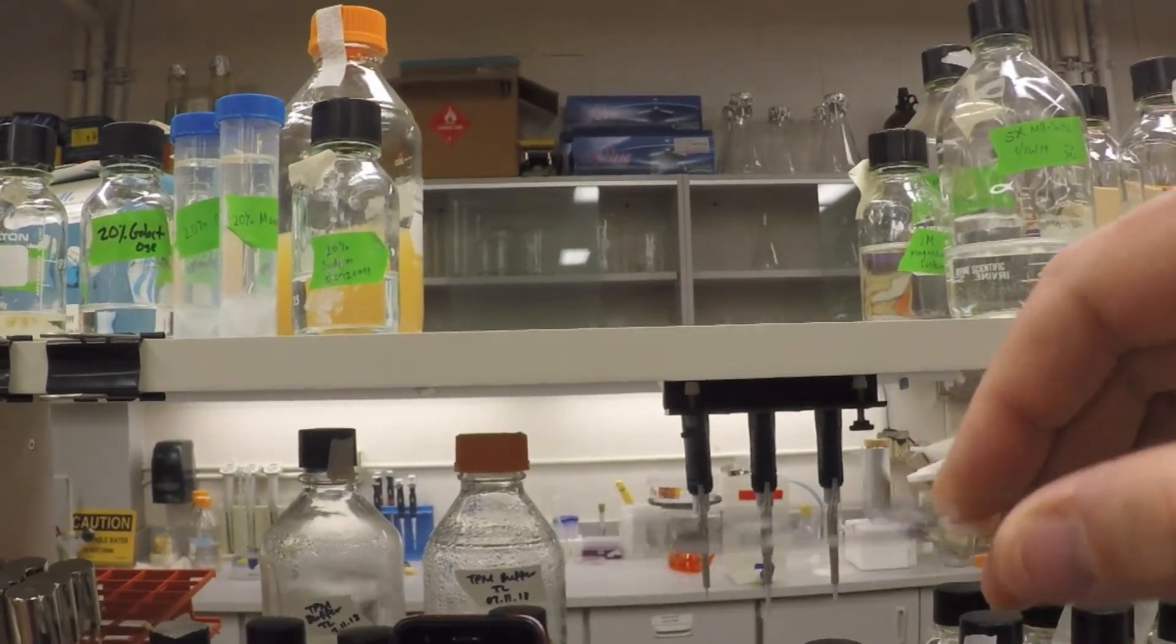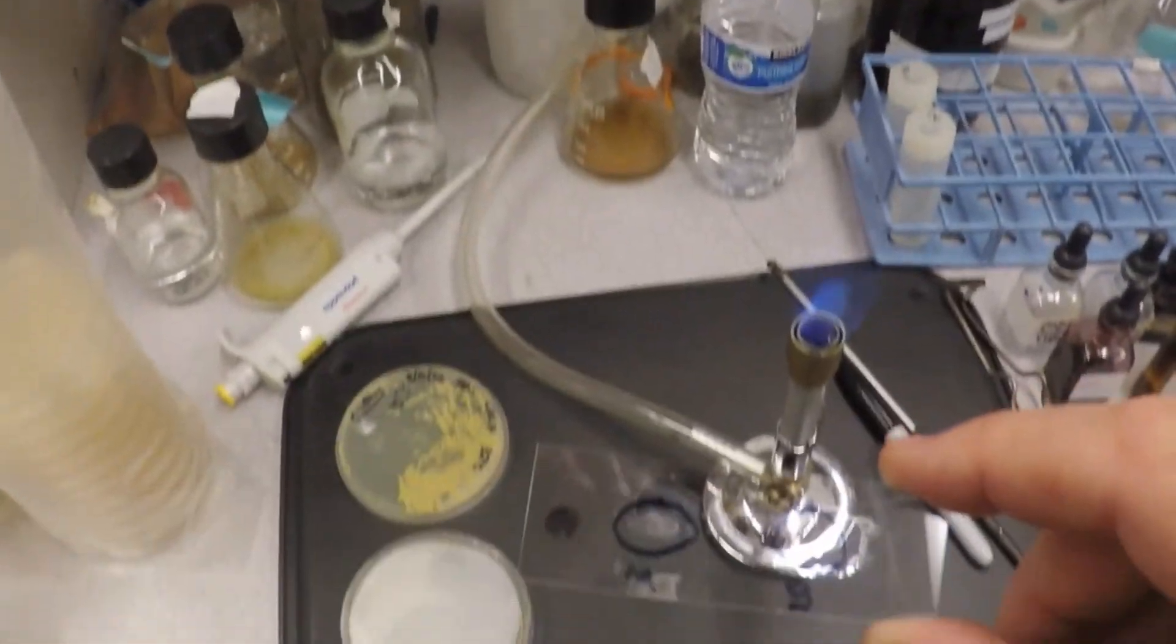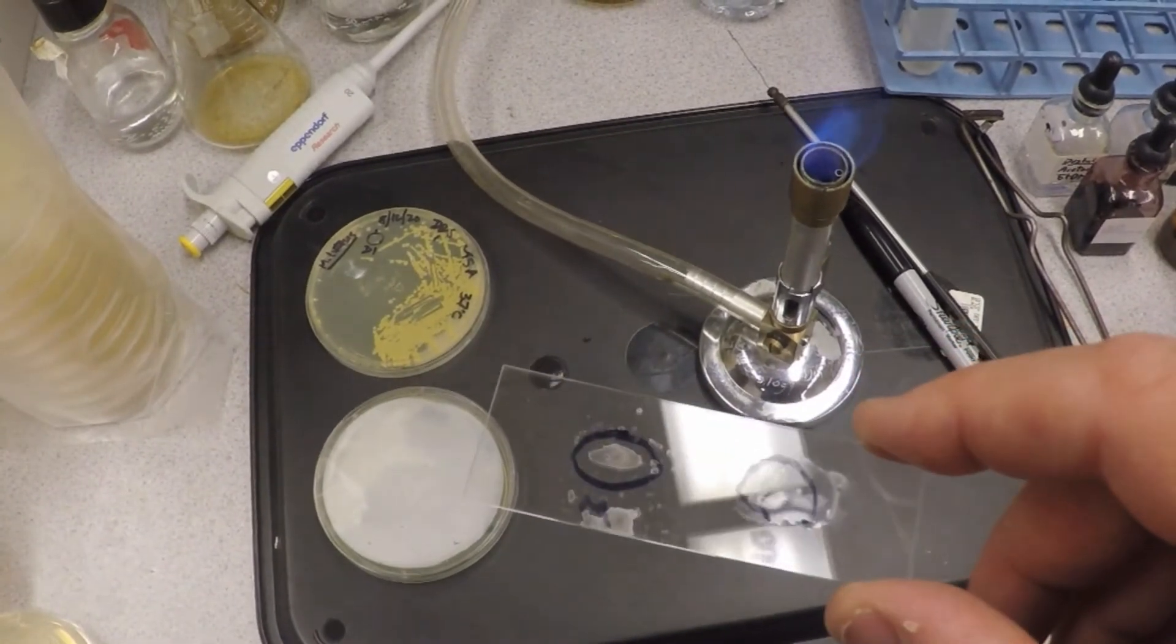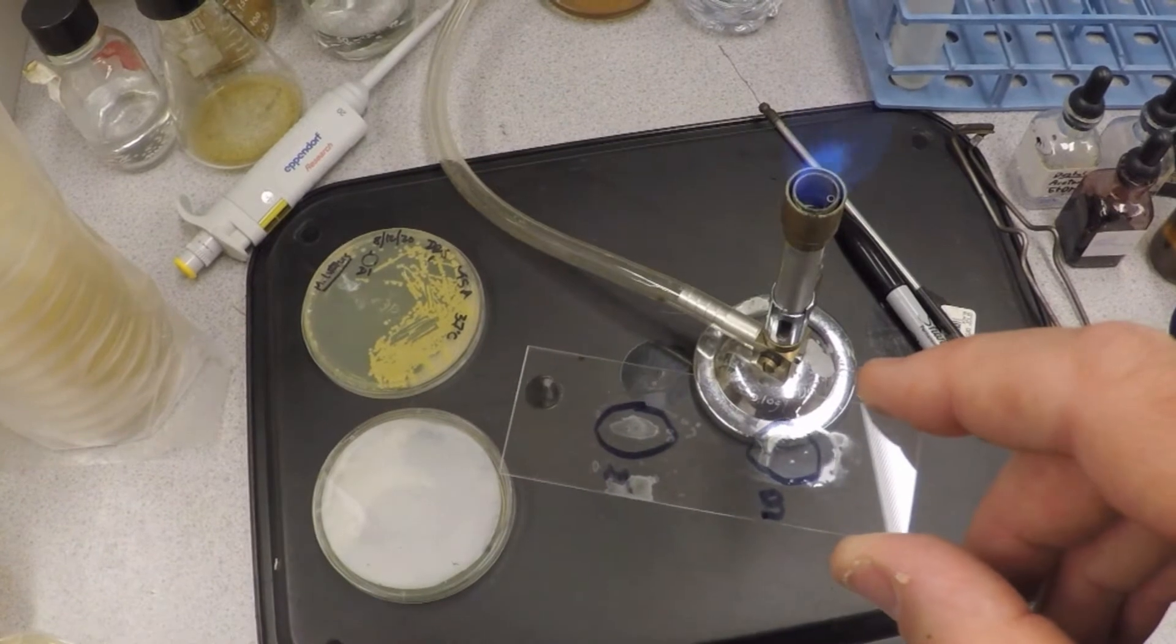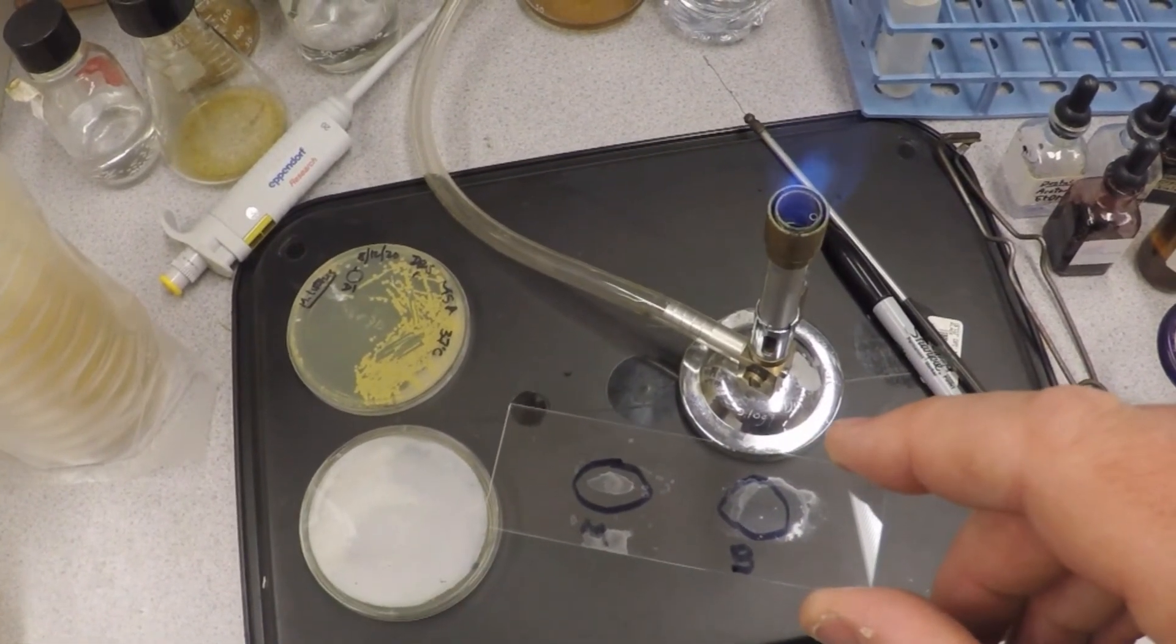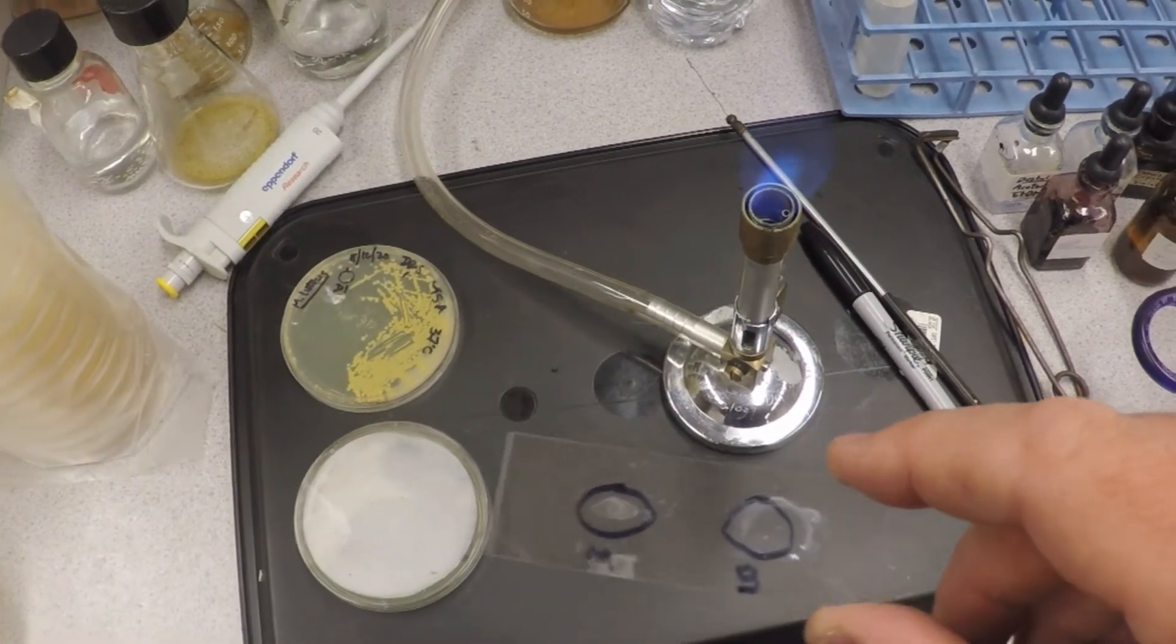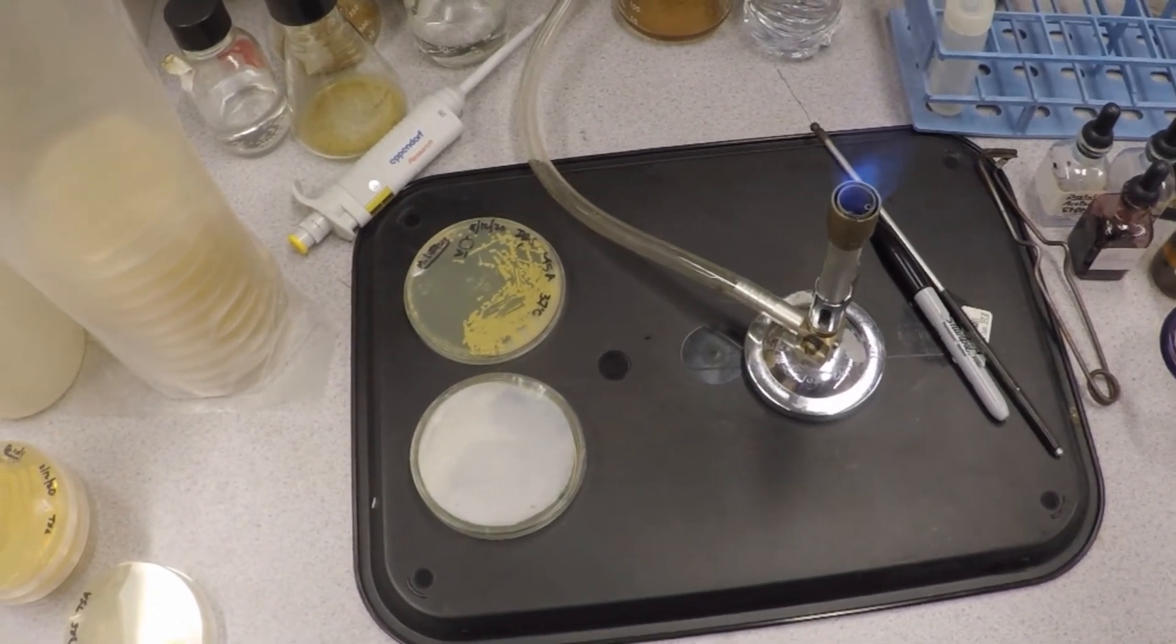Notice as it dries - can you see the little rings there of dryness in the Micrococcus side? And then the Bacillus is getting there. That's kind of what you're going to see when they dry down - they kind of dry down in little rings.